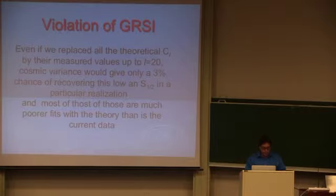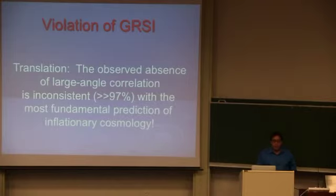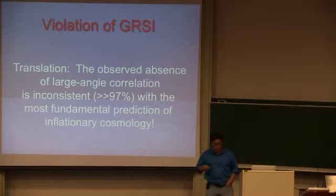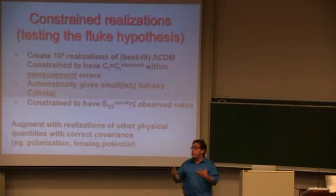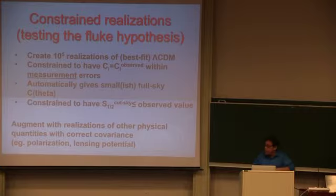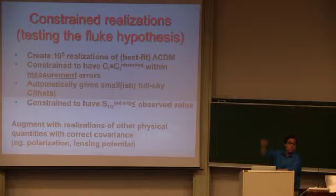The reason is that to get a low two-point correlation function requires the quadrupole, the octopole, the hexadecapole, and higher terms to balance themselves against the contributions of all the others. The different C_Ls are conspiring to give you a low two-point correlation function. So the observed absence of large-angle correlations is inconsistent with one of the most fundamental predictions of inflationary cosmology — namely that the C_Ls are statistically independent, that the A_{LMs} are statistically independent for different Ls.